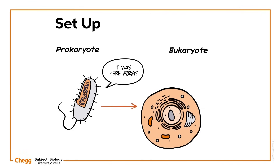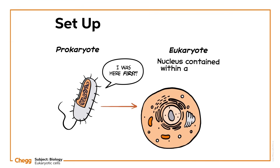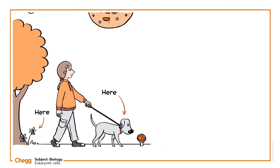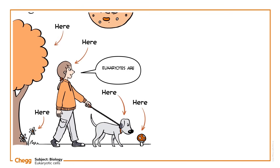A defining feature of eukaryotic cells that distinguishes them from prokaryotes is that they have membrane-bound organelles, including a nucleus contained within a nuclear envelope. From animals to plants to fungi, eukaryotes are all around us. Where did they come from?